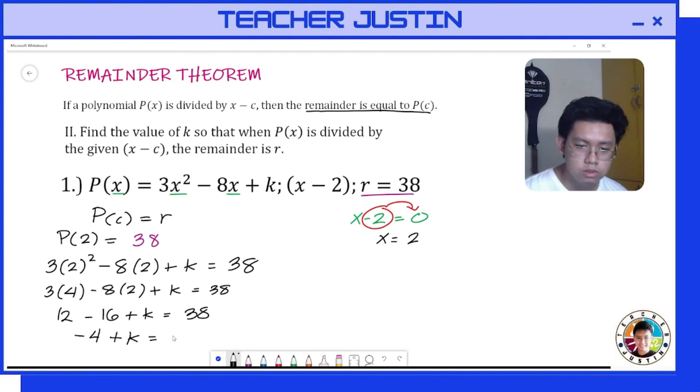Then let's add both sides by 4 to eliminate -4. So add both sides by 4 so that we can cancel 4. Now our value for k is equal to 42.